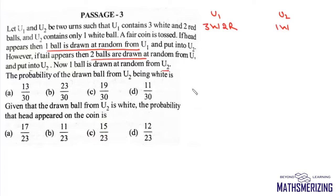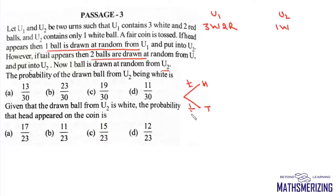First we will toss a coin and it will result in either heads or tail. The probability of getting heads is 1/2 and the probability of getting a tail is 1/2.